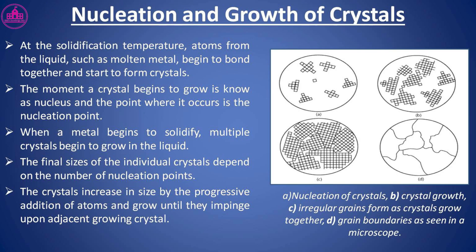Nucleation and growth of crystals: At the solidification temperature, atoms from the liquid such as molten metal begin to bond together and start to form crystals. The moment a crystal begins to grow is known as the nucleus, and the point where it occurs is the nucleation point. When a metal begins to solidify, multiple crystals begin to grow in the liquid. The final sizes of the individual crystals depend on the number of nucleation points. The sequence is: (a) nucleation of crystals, (b) crystal growth, (c) irregular grains form as crystals grow together, (d) grain boundaries as seen in a microscope.